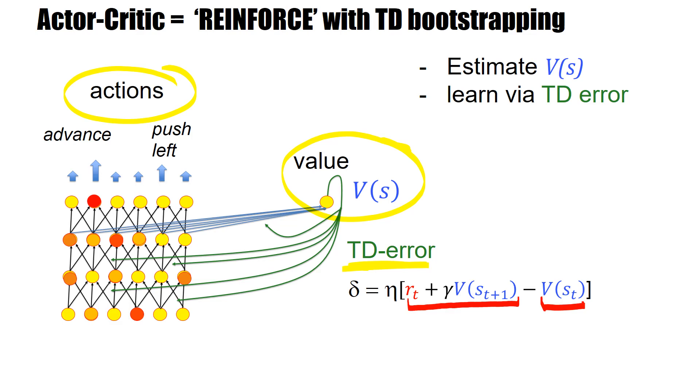Now, the structure of the network is very similar to reinforce with baseline. The difference is just in the way we estimate these V-values. So we can call this a reinforce algorithm with TD bootstrapping for the estimation of the bias, for the estimation of the V-value.